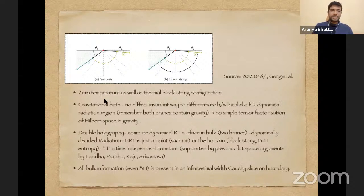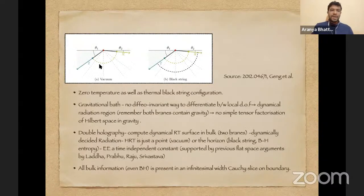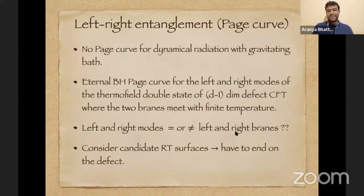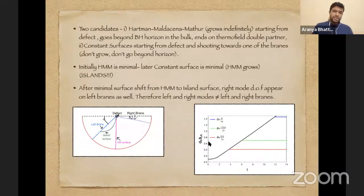The red point is a (d−1)-dimensional defect, and the setup is a thermofield double state with a partner defect mode on the other side. There is a partition made on these defect modes, called left and right modes. The question is how degrees of freedom in the bulk or on the branes respond to this partition. To explore this, candidate RT surfaces are considered; the key constraint is that they must end on the defect.